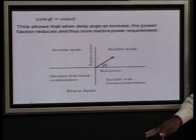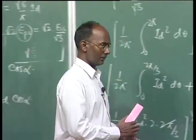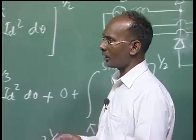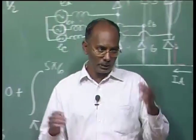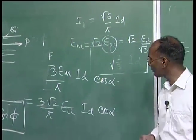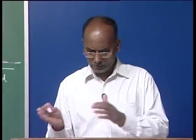In summary, this lecture covered: the relationship between power factor and delay angle (cos φ = cos α); fundamental and total RMS values of phase current; reactive power requirements for both rectifier and inverter mode operation. The ideal case assumed zero overlap angle. With overlap, these values will change, which will be discussed in the next lecture. Force commutation circuits could potentially provide leading power factor (reactive power support), but require different valve types and extra commutation circuitry.